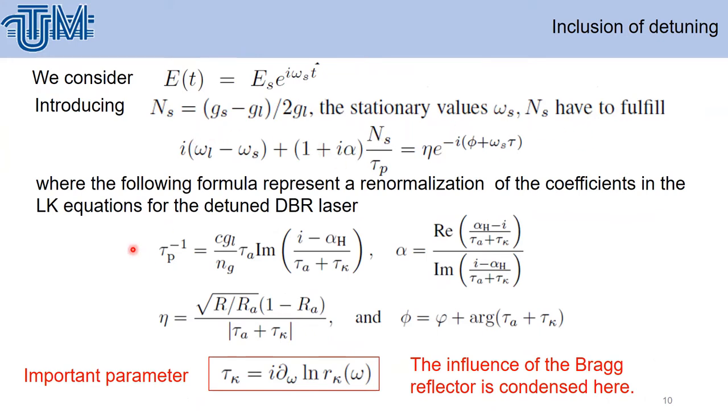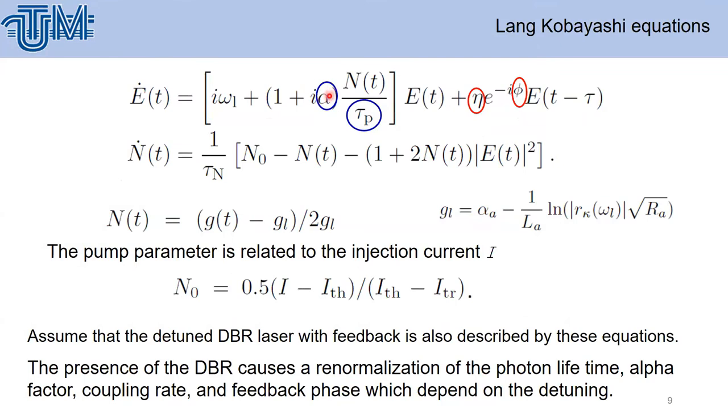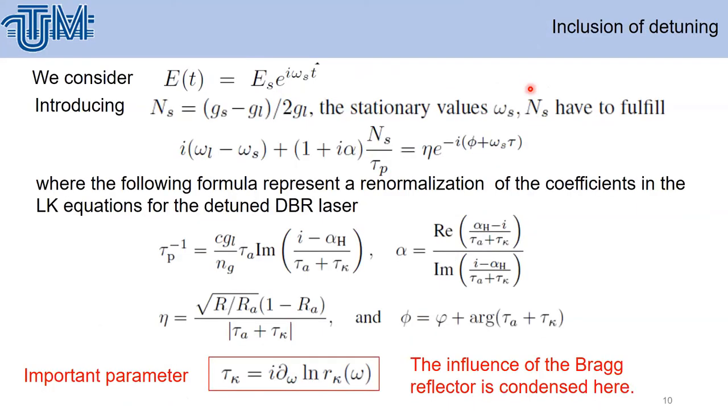Here the following formulas represent a renormalization of the coefficients in the Lang-Kobayashi equations. As I said, in our case all these four parameters depend on the detuning. Here we obtain how these parameters depend on the detuning.